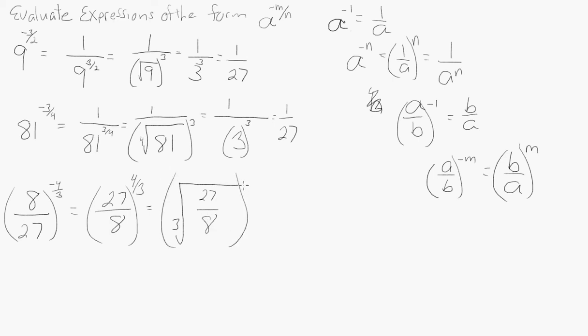This could also be the third root of 27, third root of 8, to the fourth. Third root of 27 is 3, third root of 8 is 2.